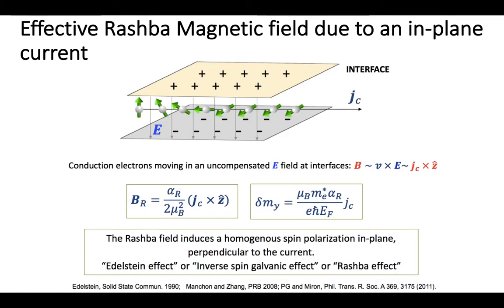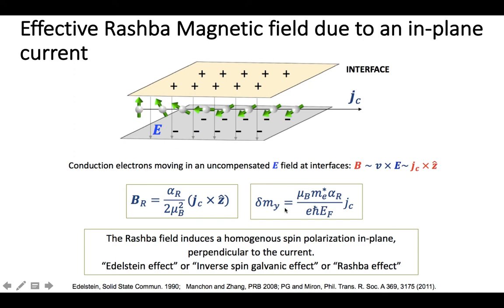The Rashba Effect takes place when at the interface of two materials there exists a broken spatial symmetry. This broken spatial symmetry creates an effective electric field, as shown in the figure. Current flowing from left to right creates an electron motion in the opposite direction. This electric field with the electron creates a net magnetic field called the Rashba magnetic field. This Rashba field induces a net polarization in the plane — this net moment or spin polarization is given by an equation where the spin polarization is perpendicular to the direction of the current, inducing a homogenized spin polarization in-plane perpendicular to the current.